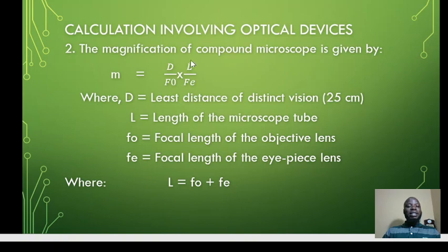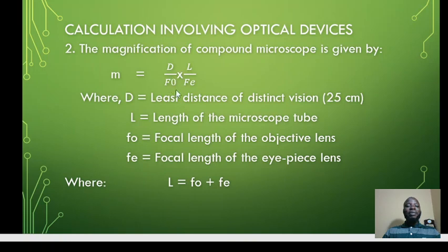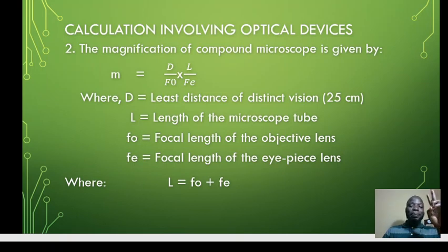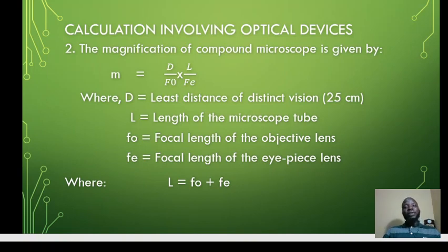This magnification formula is also the same as angular magnification — they can call it ordinary magnification or angular magnification. This formula holds when dealing with normal adjustment. Under normal adjustment, the image is formed at infinity, and at normal adjustment, the focal length of the eyepiece is equal to the focal length of the objective lens. This is a common point in past exam questions.